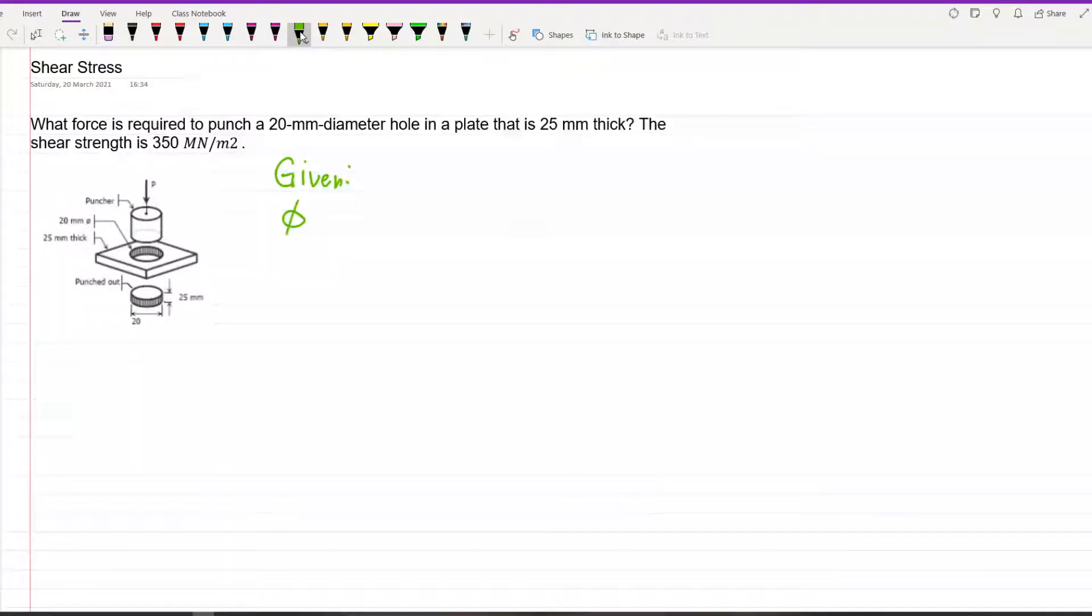Given: diameter is 20mm, thickness is 25mm, and shear strength tau is 350 MN per meter squared.